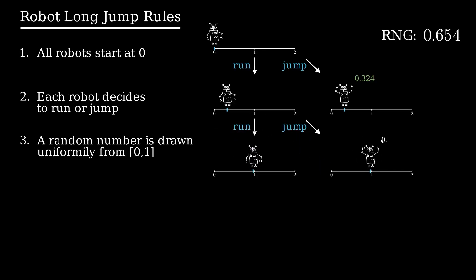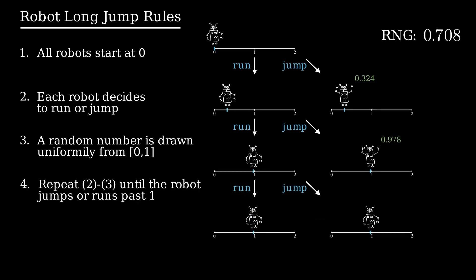This process is repeated until you finally decide to jump, or you run and go past one, in which case you fault and receive a score of zero.